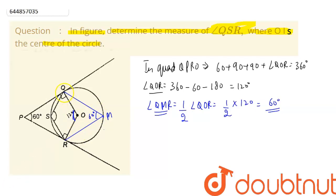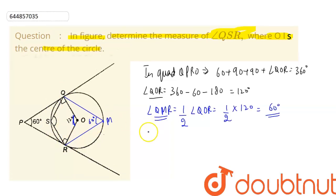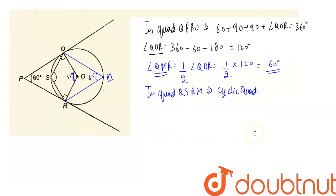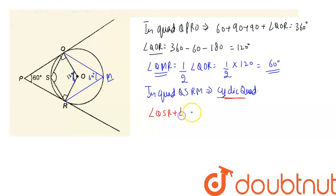Now we focus on quadrilateral QSRM. Points Q, S, R, and M all lie on the circumference of the circle, so QSRM is a cyclic quadrilateral. In a cyclic quadrilateral, the sum of opposite angles is always 180 degrees. Therefore, angle QSR plus angle QMR equals 180 degrees.